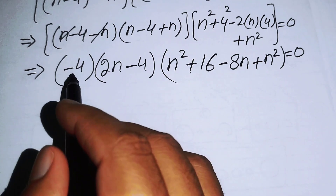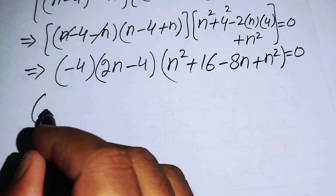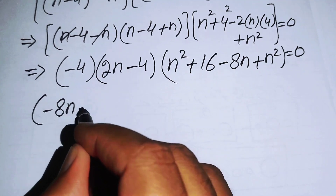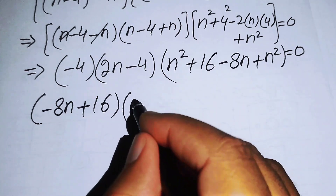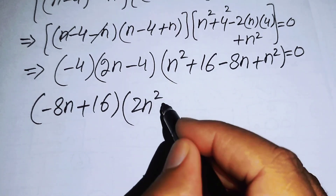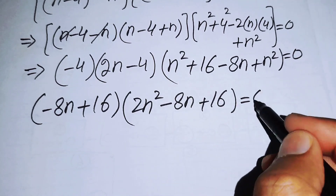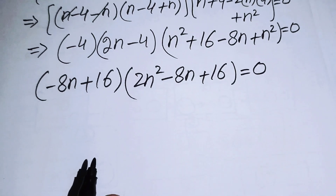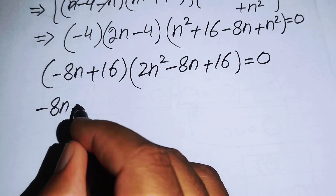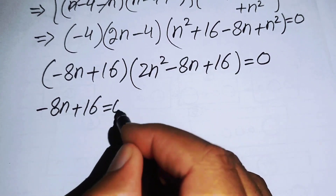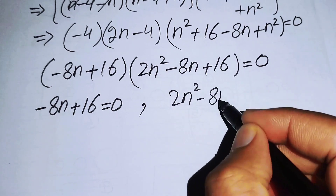We now have two cases. The first factor gives us (2n minus 4) equals 0, and the second factor gives us 2n² minus 8n plus 16 equals 0.